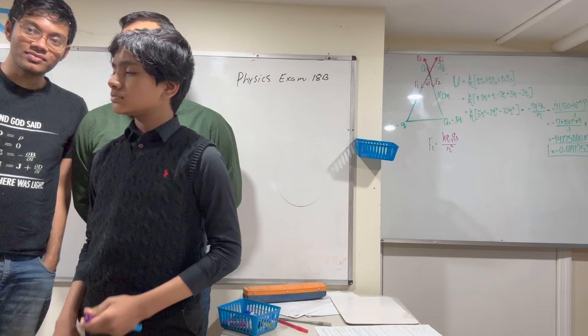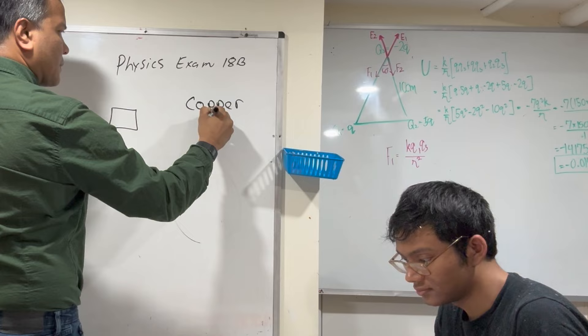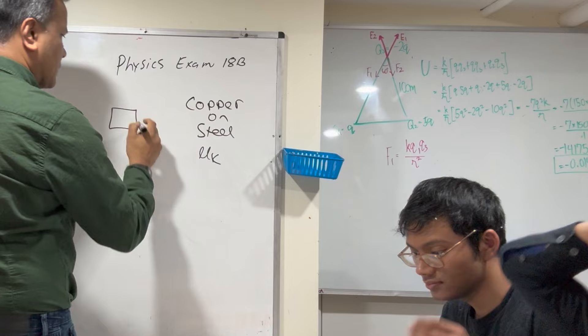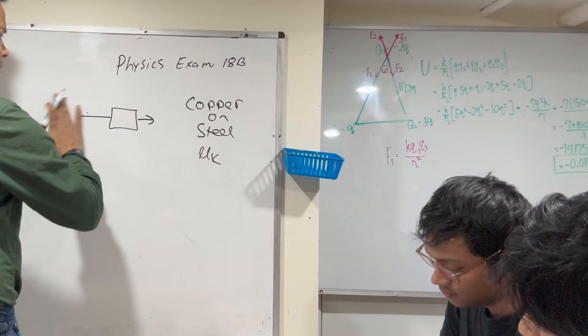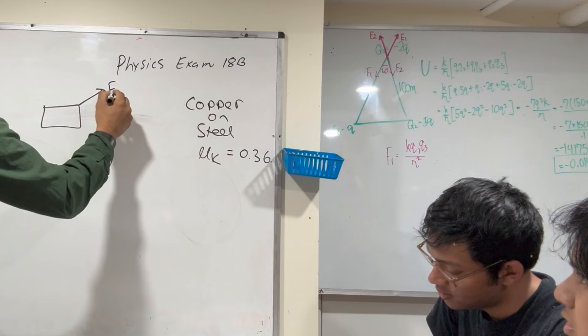My name is Riffat Bari, I'm a Brown master's student in physics. A box is moving on steel with constant velocity. You're pulling it with a 100-Newton force northeast at a 30-degree angle with respect to the horizontal. The coefficient of friction for copper on steel — would you be able to tell me? 0.36. What is the unit? There is no unit — good, that was a trick question.